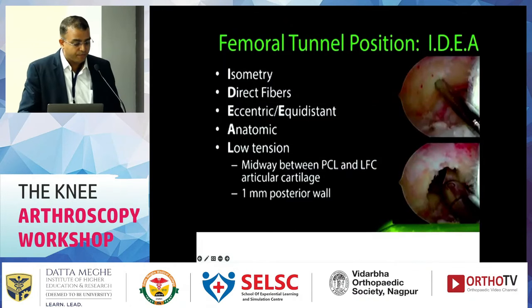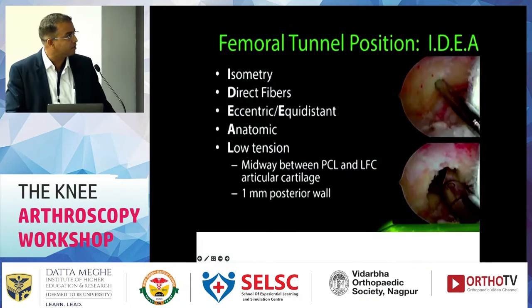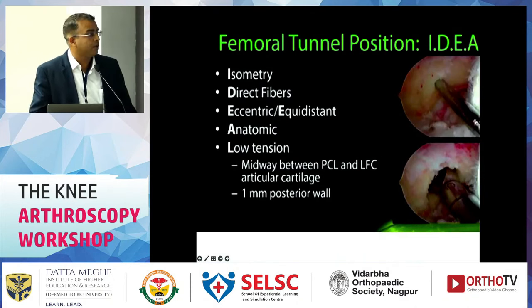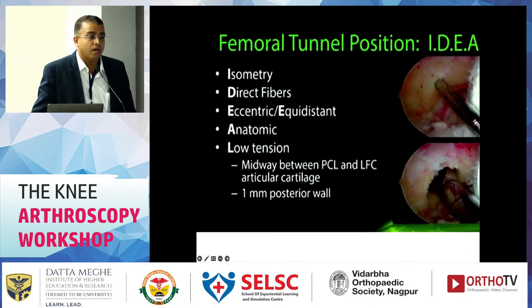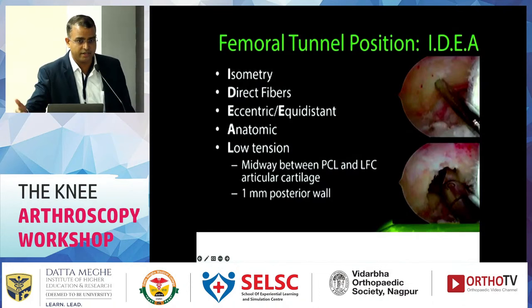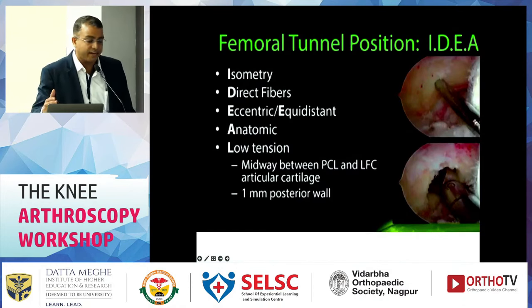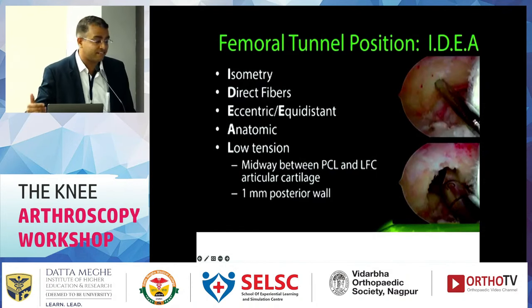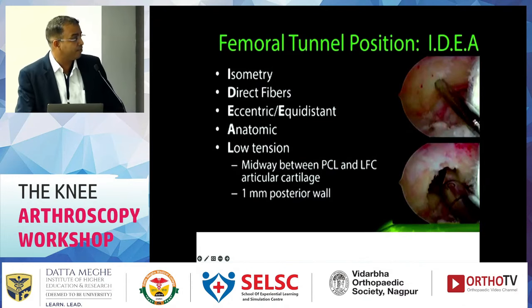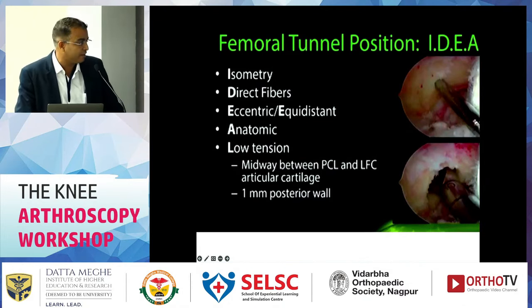For the femoral tunnel position, remember this: it should be more isometric, focusing on the direct fibers of the ACL; it should be eccentric, more anatomic, and provide less tension to the graft — that is, midway between the PCL and the lateral femoral condyle articular cartilage — with a margin of 1 mm on the posterior wall.